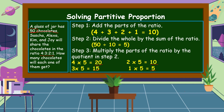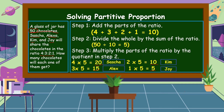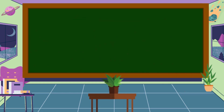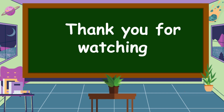Therefore, Sasha will get 20 chocolates, Alexa will get 15 chocolates, Kim will get 10 chocolates, and Joy will get 5 chocolates. This is how we solve a partitive proportion. I hope you understand our lesson for today — thank you for watching!